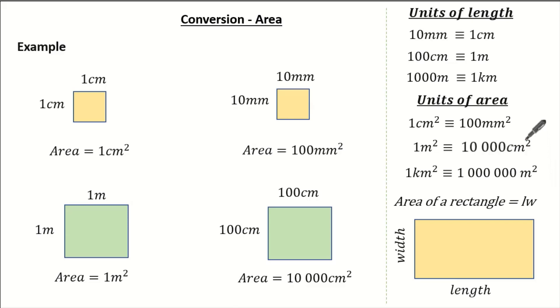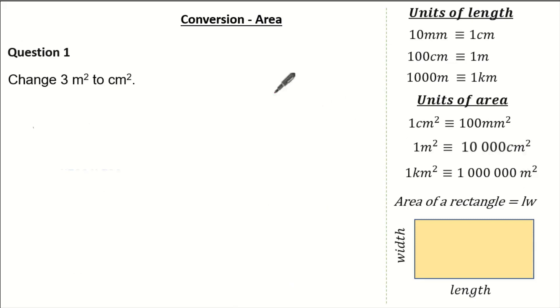So now we've quickly gone through the units of area, let's see if we can put it to a question. Here, the past exam question wants us to change 3m squared to centimeters squared. Well, I know that 100cm is 1m. So multiplying our 3 by 100 and 100 makes 30,000cm squared. Therefore, 3m squared is exactly the same as 30,000cm squared.